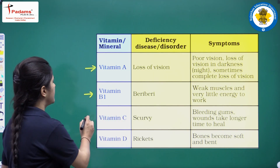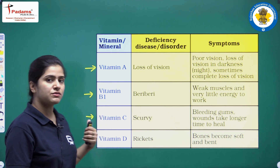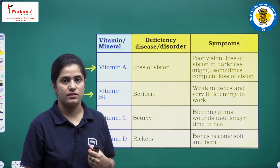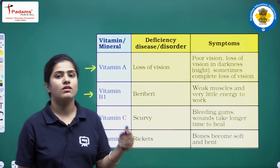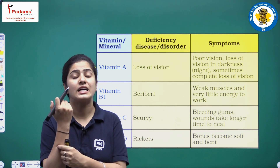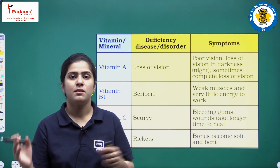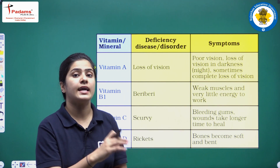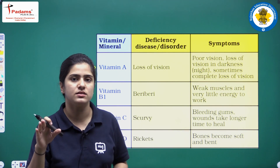Third, vitamin C. Because of the deficiency of vitamin C, scurvy will occur. Due to this disease your gums will be bleeding and your wounds will take a longer time to heal.